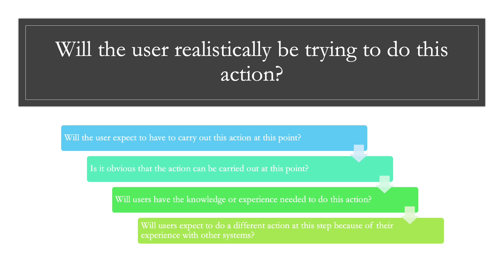For question one — will the user realistically be trying to do this action? — we break this down into four sub-questions: Will the user expect to have to carry out this action at this point? Is it obvious that the action can be carried out at this point? Will users have the knowledge or experience needed to do this action? And will users expect to do a different action at this step because of their experience with other systems?